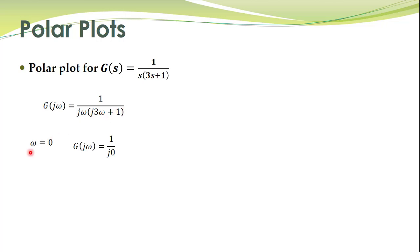So corresponding to omega equal to 0, we have this thing, 1 over j0. So what is the magnitude of this complex number?